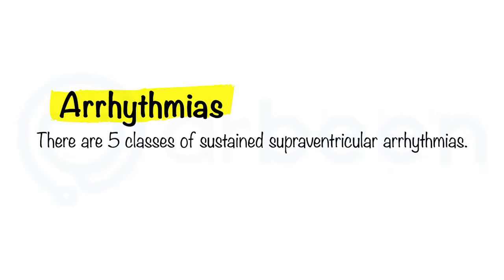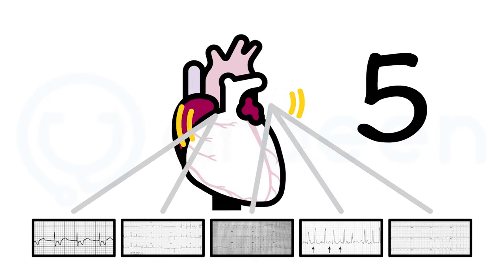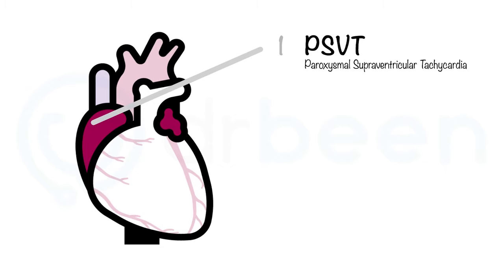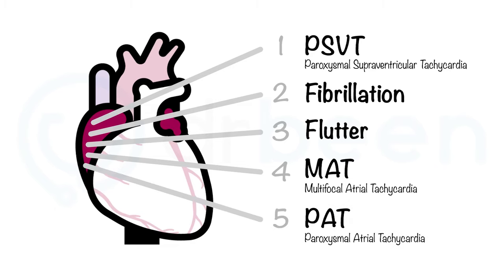There are five classes of sustained supraventricular arrhythmias: 1. Supraventricular tachycardia, or PSVT. 2. Atrial fibrillation. 3. Atrial flutter. 4. Multifocal atrial tachycardia, or MAT. And 5. Paroxysmal atrial tachycardia, or PAT.